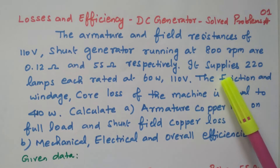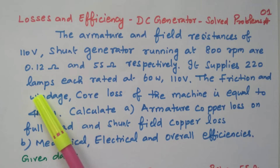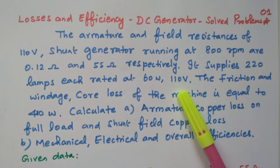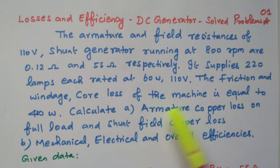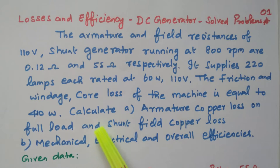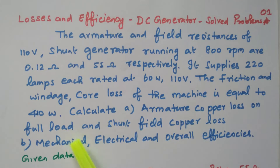It supplies 220 lamps, each rated 60 watts at 110 volts. The friction and windage core losses of the machine are equal to 410 watts. Calculate: first, armature copper loss on full load and shunt field copper loss; second, mechanical, electrical, and overall efficiencies.